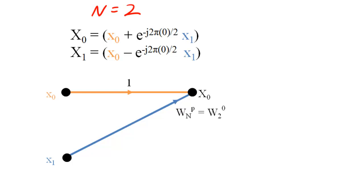Schematically, we calculate the DFT using a structure called a butterfly. This schematic shows that we multiply X1 by W sub 2 raised to the 0 and add a product to X0 to compute the first DFT sample.